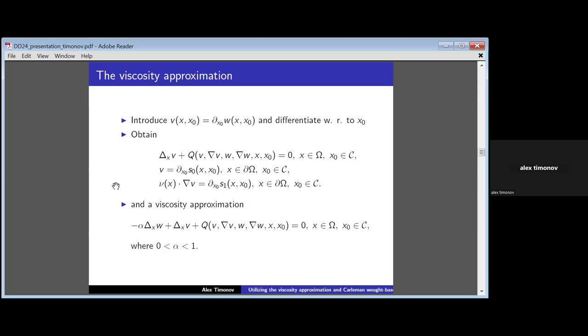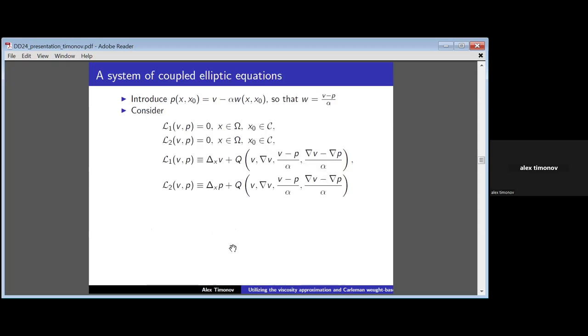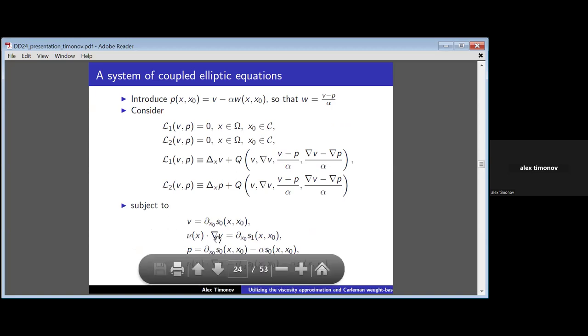What we can do now, we have to avoid this rough approximation. And the avoiding is introducing the viscosity approximation, which means introducing the viscosity term, minus α Δw or plus α Δw. Now, it still depends on two variables. But now we can introduce the third variable p, which is v minus α Δw. And reduce that problem to the system of coupled differential equations, like that, with the corresponding Cauchy condition.